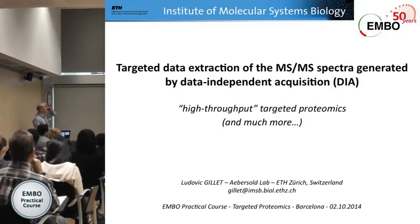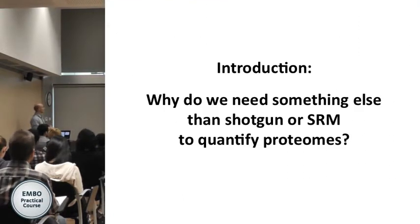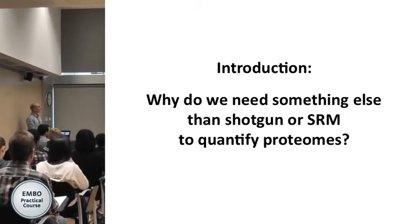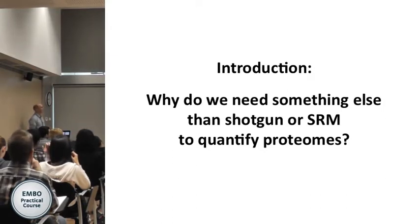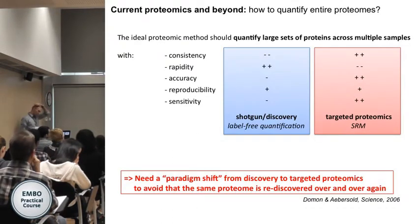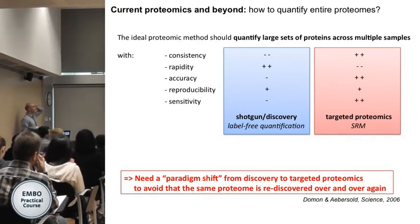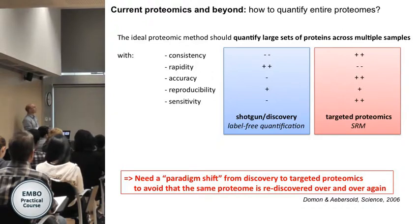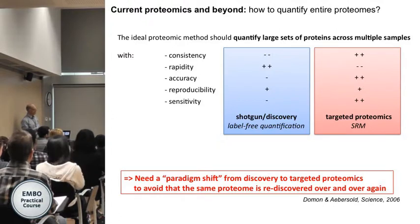I'll drive you through the different methods. The first big comment is to explain why we cannot just do one idea, and why we need something between shotgun and SRM to quantify proteomes. What we want ideally in proteomics is to quantify a large set of proteins across large sample cohorts — with good consistency, rapidity, and accuracy.